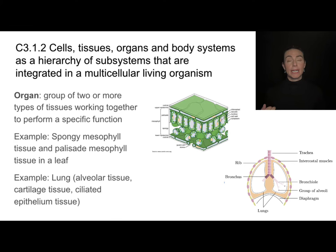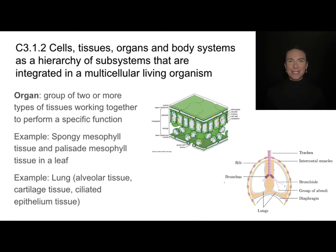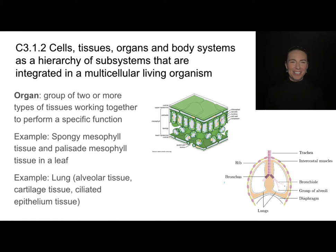Similarly, an organ is going to be two or more types of tissues working together. In the lung, we have our alveolar tissue, but we also have cartilage tissue and lots of other types of tissue that make up that organ. Plants also have organs — a leaf, for example, has palisade mesophyll tissue and spongy mesophyll tissue, and they make up the organ called a leaf.